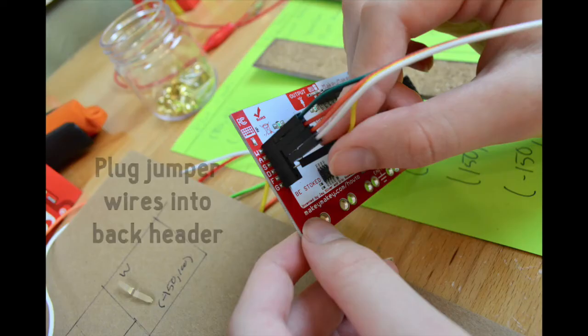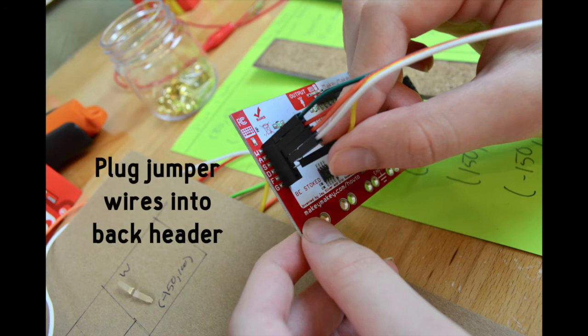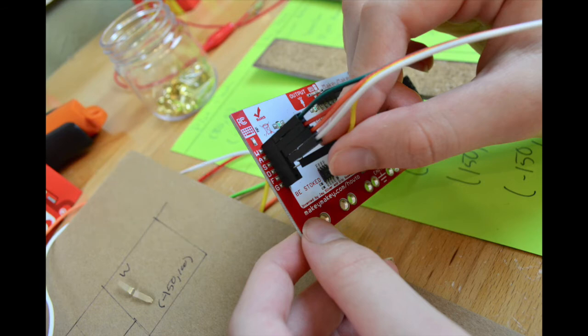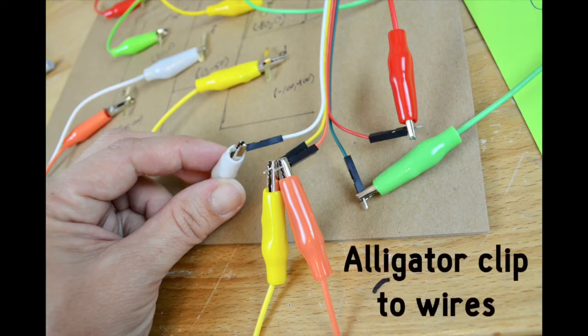You're going to use the back of the board for this project. So you're going to plug jumper wires into the back header. I'm using a ribbon cable and matching the colors from the ribbon cable to my alligator clips, so that I won't get confused if I have to work on any of these if they come unplugged.